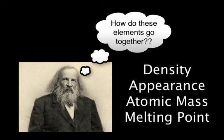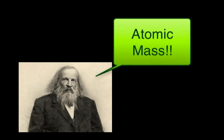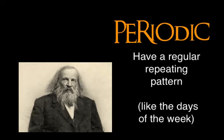He then arranged and rearranged the pieces of paper, and after much thought and work, he determined that there was a repeating pattern to the properties of the elements when the elements were arranged in order of increasing atomic mass. Mendeleev saw that the properties of the elements were periodic, meaning they had a regular repeating pattern. Many things that are familiar to you are periodic — for example, the days of the week are periodic because they repeat in the same order every seven days.